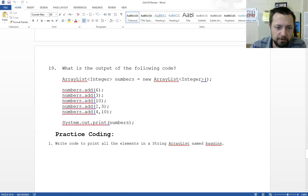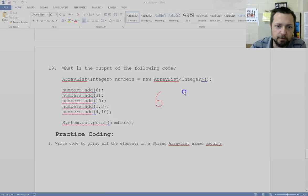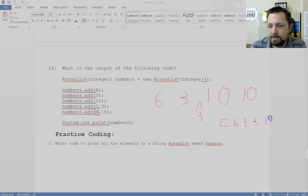19. I'm almost to the free coding part. Excited about that. So we do 6, we do 3, we do 10. Add at position 2 a 3. So right there we're going to put in another 3. Then go to spot 4. 0, 1, 2, 3, 4. And a lot of you would probably think this is out of bounds. But when you do add at a location, you're allowed to use the size of the list. That's saying it goes to the very end. But if I had said go to spot 5, that would be 2 past the end of the list and that would crash. So when we go to print numbers, it's going to be bracket 6, 3, 3, 10, 10 with commas separating them.